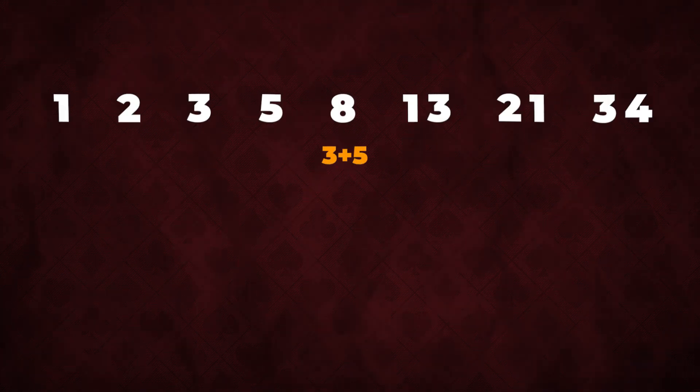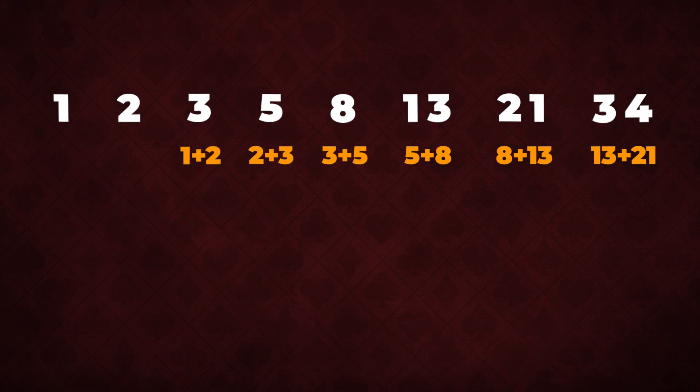And the last one today: the Fibonacci betting system. Just like the previous strategies, only use this technique when the odds of winning are 50%. You'll be needing paper for this one too. However, this time around, you'll need to write down the Fibonacci sequence starting from 1 till 34. You'll get these numbers by simply adding the sum of the previous two numbers. If it sounds complicated, don't worry — here's how it goes.